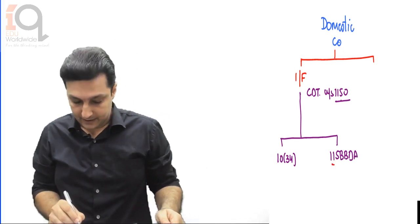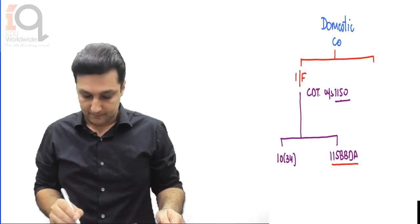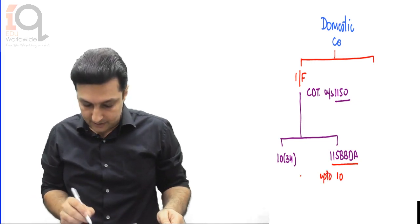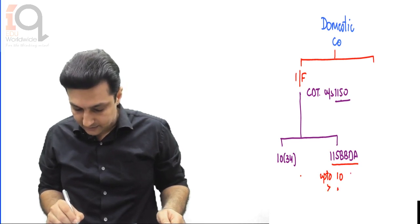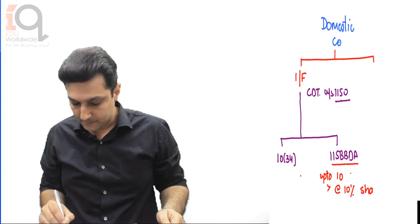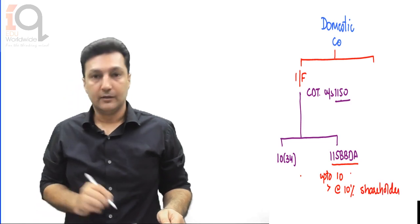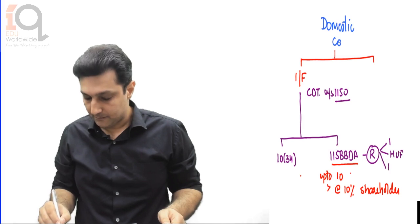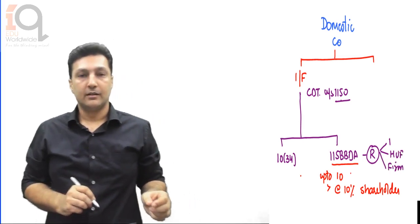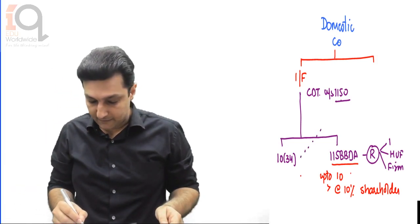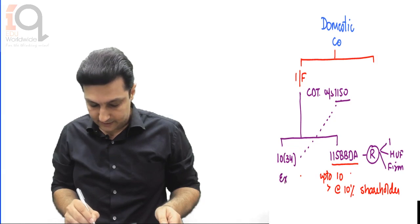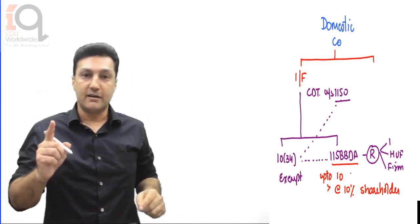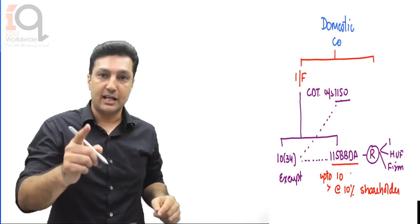Section 115BBDA says that dividend received from a domestic company - up to 10 lakhs is exempt, and above that it is taxable at the rate of 10% in the hands of the shareholder. But section 115BBDA is only applicable to a resident individual, HUF and firm. Section 10(34) says that if dividend is covered by 115O then it is exempt, but other than 115BBDA - which means if dividend falls under 115BBDA, it will not be exempt under section 10(34).